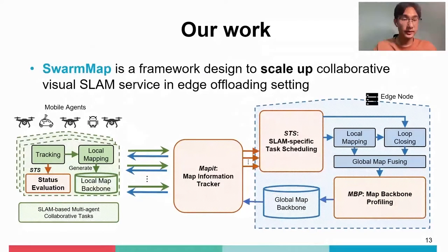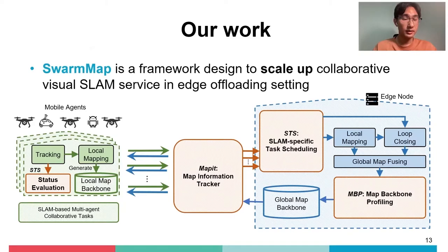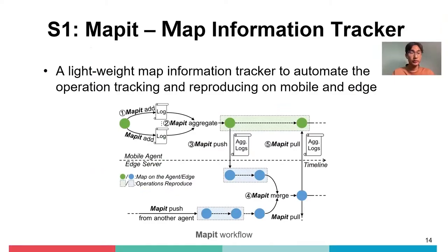Based on our key insights, we designed SwarmMap, a framework that scales up collaborative Visual SLAM service in the edge offloading setting. SwarmMap shares a similar edge-based architecture with previous works and provides extra system support on both the mobile agent and edge server side. Specifically, our design includes three parts: MapIt, MBP, and STS. To reduce transmission overhead, we designed MapIt, a lightweight map information tracker to automate operation tracking and reproducing on the mobile device and edge.